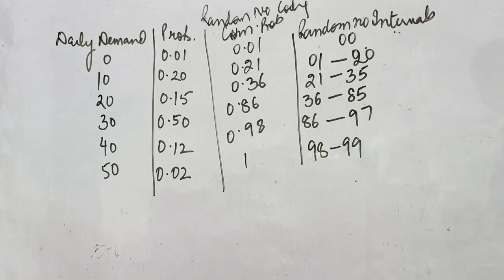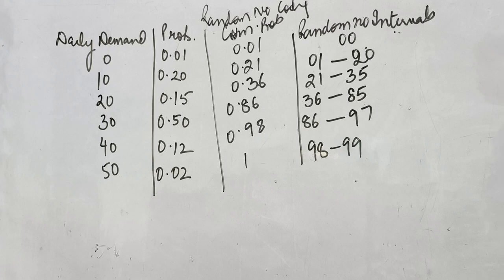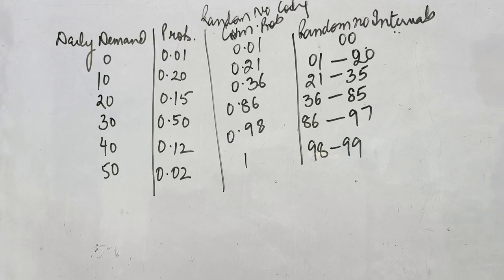The random numbers have been given in the question already — they will be given in almost every question. If not given, there are various random number tables from where we can take them. These are randomly selected numbers with no fixed criteria, so you can take any two last values, first two values, or central two values. You can randomly take any value if nothing is specified, but in 99% of cases the random numbers will be given.